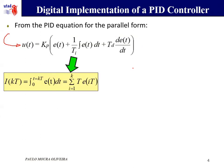In the integral part we can approximate the integral using a sum of the product between the error in the given i-th sample multiplied by T, which is the sampling time.